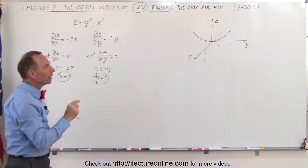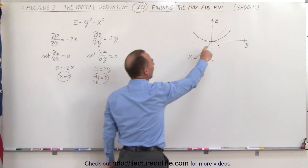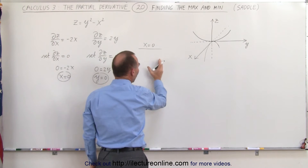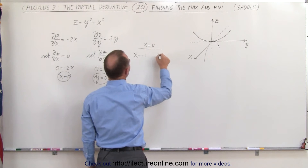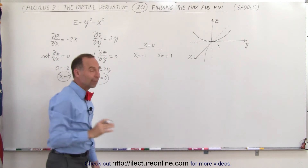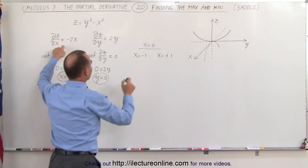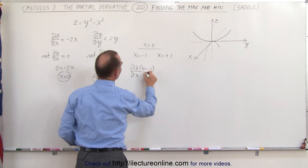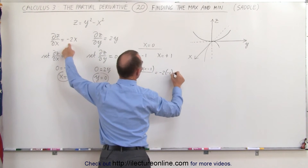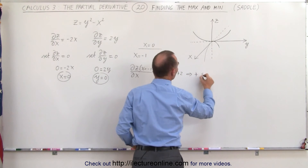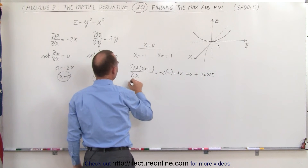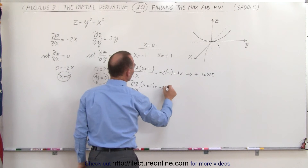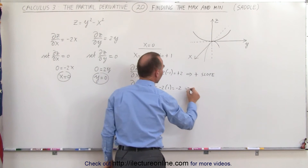Now let's plug values into the derivative on both sides of the x = 0 and y = 0 points. For x = 0, we go left and right, plugging in x = −1 and x = +1. The partial of z with respect to x at x = −1 equals negative 2 times negative 1, which is positive 2 — a positive slope. At x = +1, it equals negative 2 times 1, which is negative 2 — a negative slope.